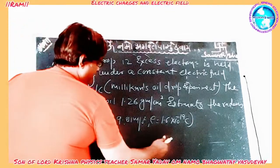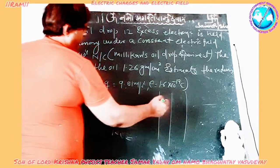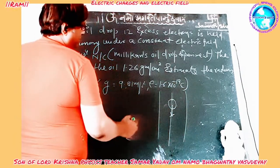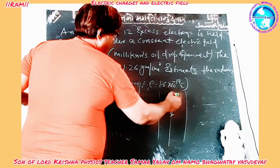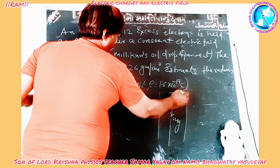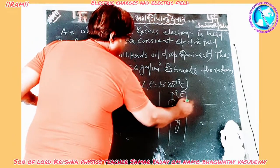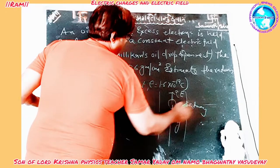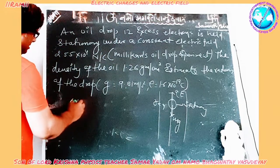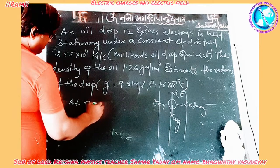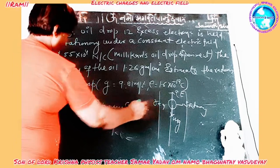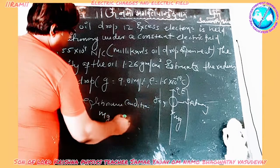Now, suppose this is the electric field applied on this drop. The drop is moving in a uniform electric field. At one point, the weight of the drop is equal to the electric force, that is QE. Then this drop becomes stationary. When it is stationary, we have to calculate the radius of the drop. At equilibrium condition, the electric force QE equals the weight.